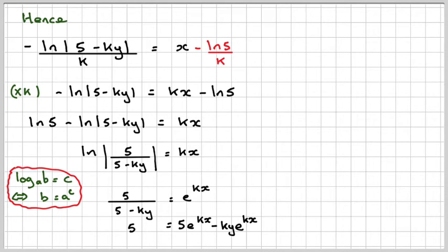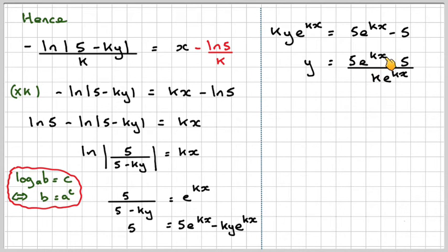If we multiply through, 5 will be e to the kx times 5 minus ky times e to the kx. And then we're going to have that ky e to the kx, because we're going to make y the subject, is equal to 5 e to the kx minus 5. Therefore, y will be 5 e to the kx minus 5 over ke to the kx.